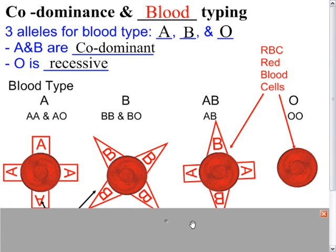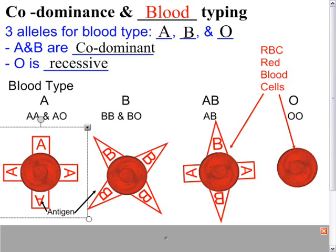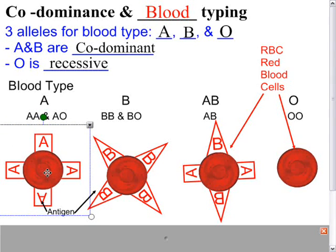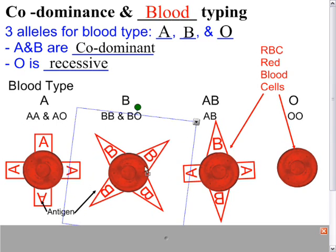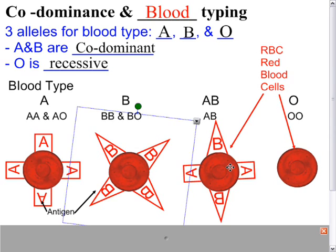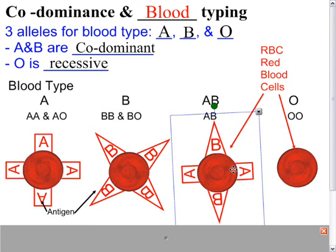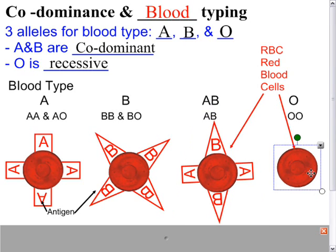A, B, and O refer to the type of blood you have. If you are type A, then you have A antigens on your blood. An antigen is something that your body attacks if it is foreign. If you have blood type A, it's not foreign to you and your body won't attack it. If you are type B, you have B antigens. Type AB isn't a third antigen, but simply has both A and B antigens on your blood.